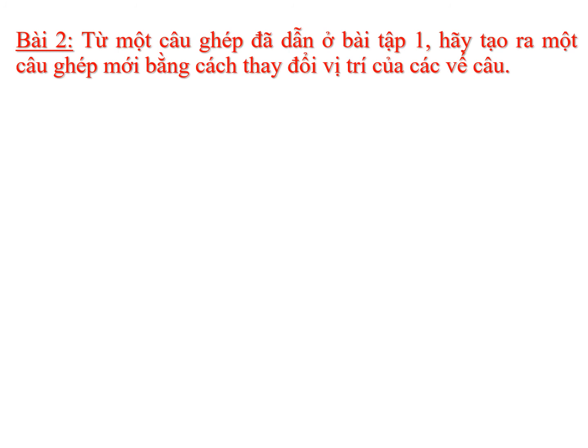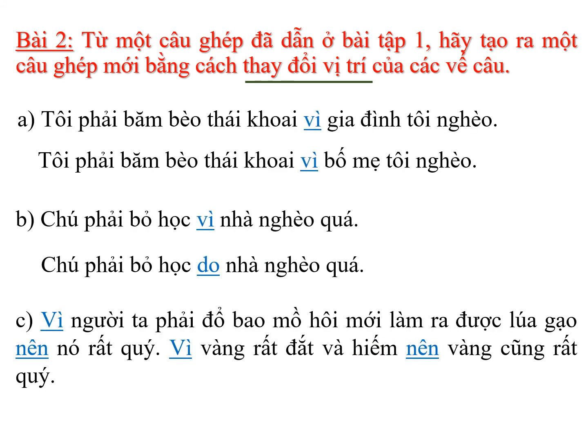Chuyển sang bài tập số 2: Từ một câu ghép đã dẫn ở bài tập 1, hãy tạo ra một câu ghép mới bằng cách thay đổi vị trí các vế câu. Bốn ví dụ đã nêu ở bài tập 1 đều là những câu ghép có 2 vế câu. Từ những câu ghép đó, các em hãy tạo ra câu ghép mới bằng cách thay đổi vị trí của các vế câu. Các em đã hiểu chưa? Hãy tạm dừng video để làm bài. Sau khi làm xong, các em có ra đáp án giống cô không? Cô chúc mừng các em có câu trả lời đúng.